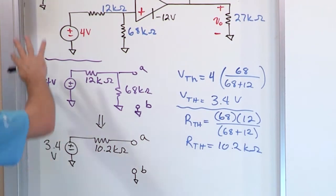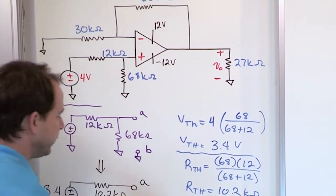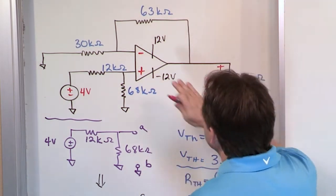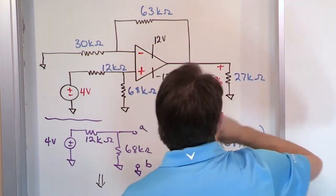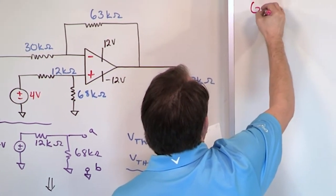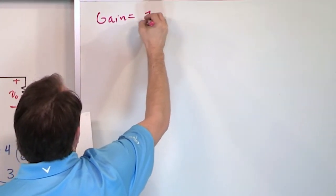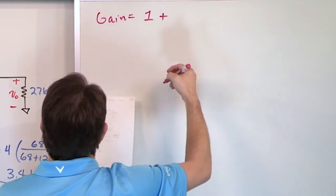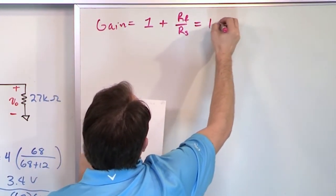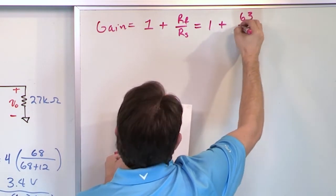All right, so what we need to do then is figure out what is the gain of this amplifier, so that we can calculate what the output voltage should really be. The gain is 1 plus this over this. There's no negative signs because this is a non-inverting configuration. So the gain is 1 plus the ratio of those two resistors, RF over RS. So it's 1 plus 63 over 30.